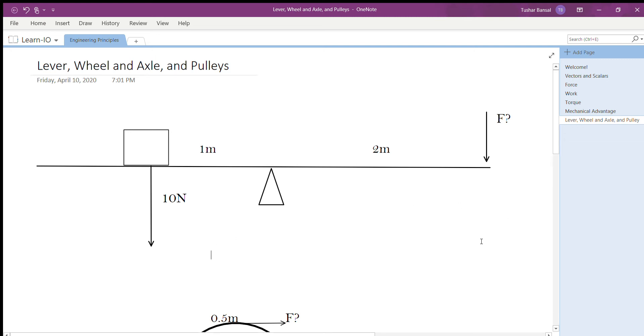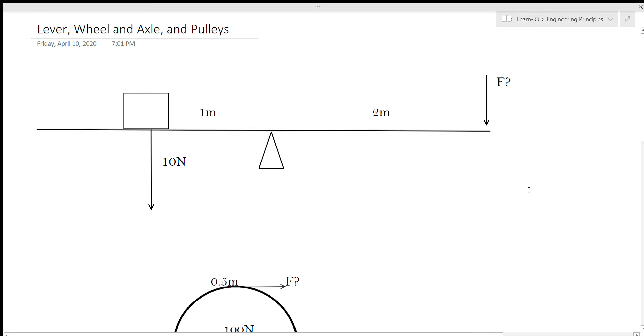Welcome to Simple Machines Part One as part of the Engineering Principles course. Today we're going to be learning about levers, wheel and axles, and pulleys - the first three types of simple machines.